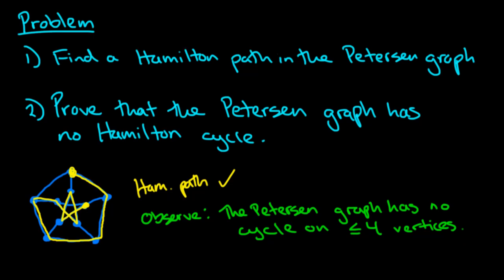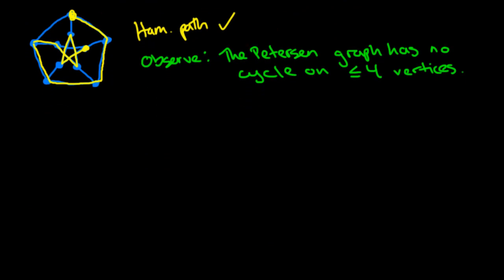So I'll just scroll down here so we can just see the Petersen graph. What we're going to do is we're going to prove this by contradiction. So proof by contradiction.